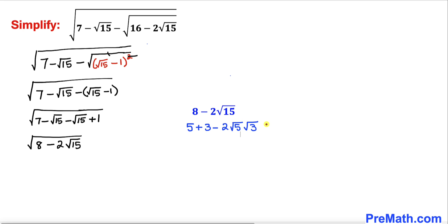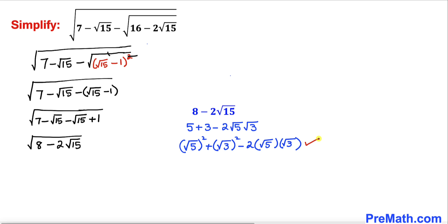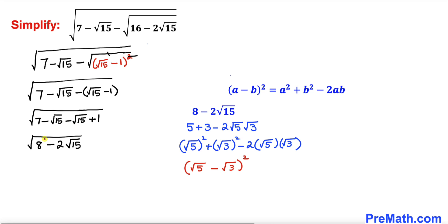In the next step, 5 can be written as square root of 5, whole squared, and likewise 3 can be written as square root of 3, whole squared. Now let's recall the identity a minus b, whole squared, once again and apply it here. This whole thing could be written as the perfect square: square root of 5 minus square root of 3, whole squared. So the entire radicand has been simplified to that form.